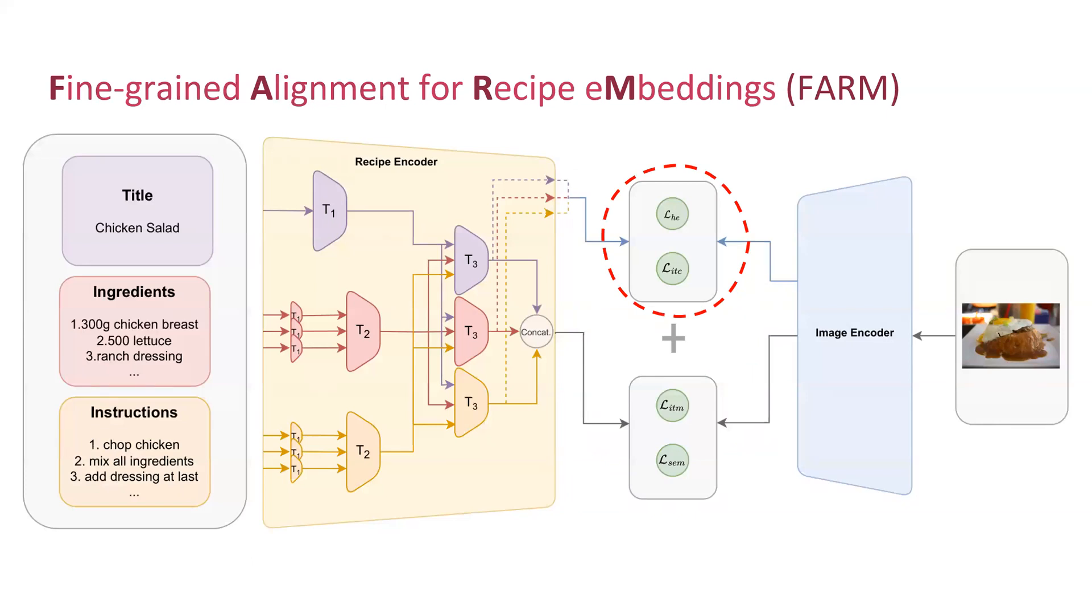This is the overview of our model FARM. We use a hierarchical transformer setup to encode the recipe. Then the title, ingredient, and instruction embeddings are passed through a cross encoder and concatenated to get the final recipe embedding. For the image embedding, we simply use CLIP.